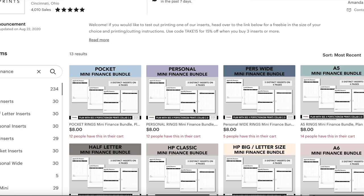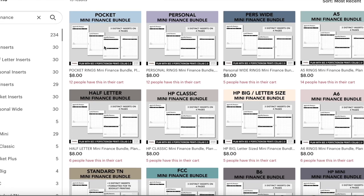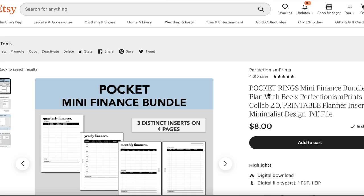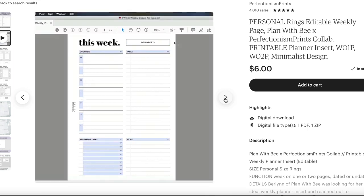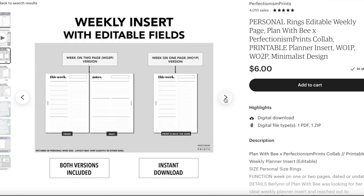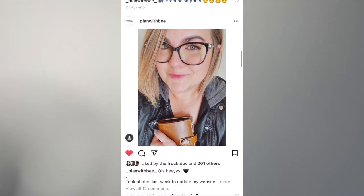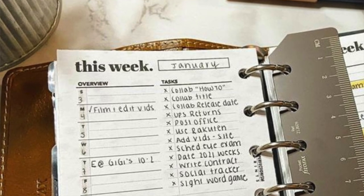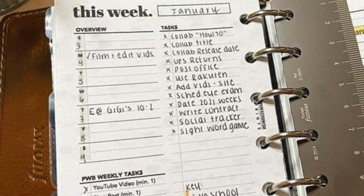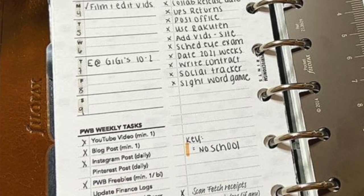And if you're not aware, Berlin is who I have done two collabs with for Perfectionism Prints. We worked on the mini finance bundle together and also the editable weekly insert. She has the most amazing ideas for packing a huge amount of efficiency into a small footprint as evidenced by the fact that her main planner is pocket sized, which never ceases to amaze me.